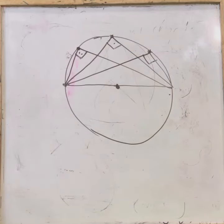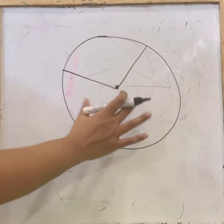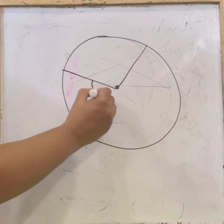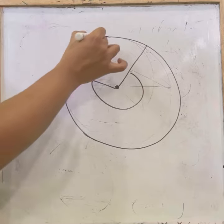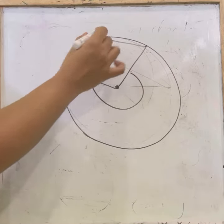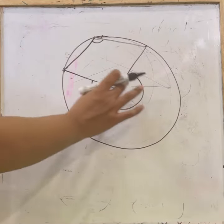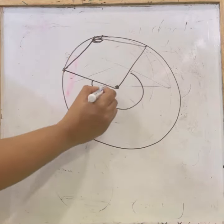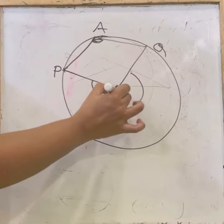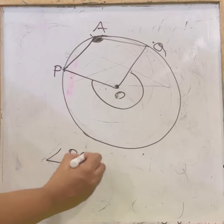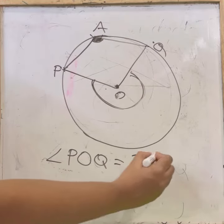Next, drawing a sector — this is the minor sector and this is the major sector. The reflex angle at the center and the angle subtended at a point on the remaining arc have a relation: the reflex angle POQ is double angle PAQ. So reflex angle POQ equals double angle PAQ.